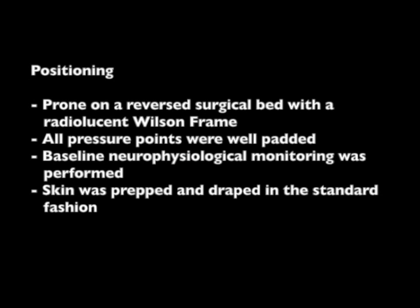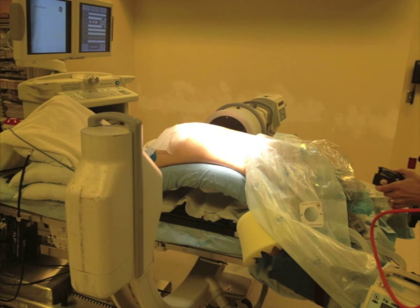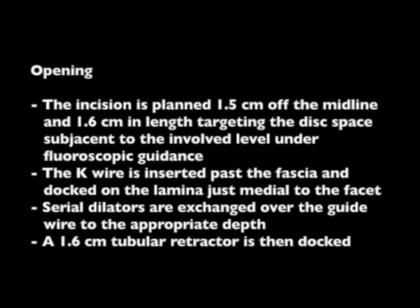The patient is positioned prone on a reverse surgical bed on a radiolucent Wilson frame. Pressure points are padded and the patient is draped in a standard fashion. The incision is planned 1.5 cm off the midline and 1.6 cm in length, targeting the disc space sub-adjacent to the involved level under fluoroscopic guidance.